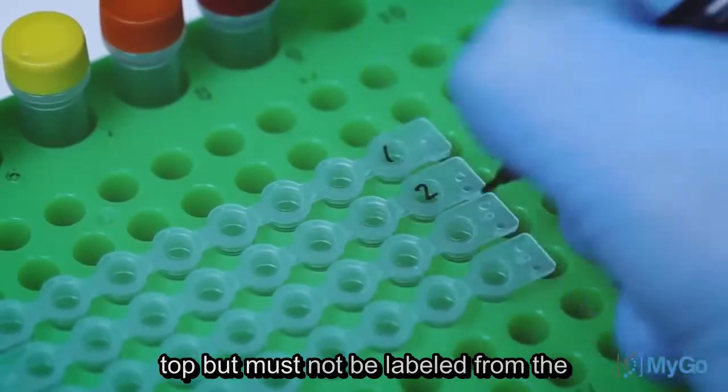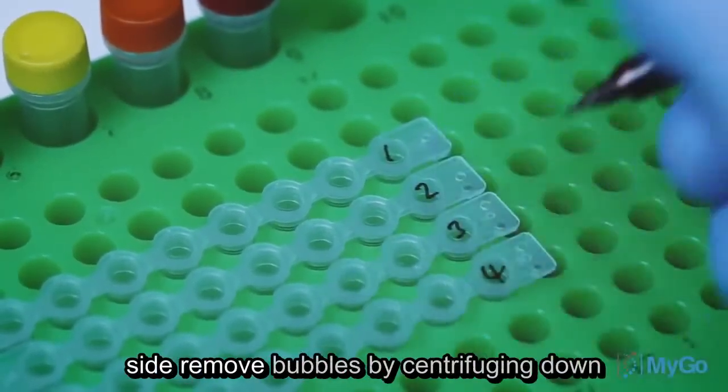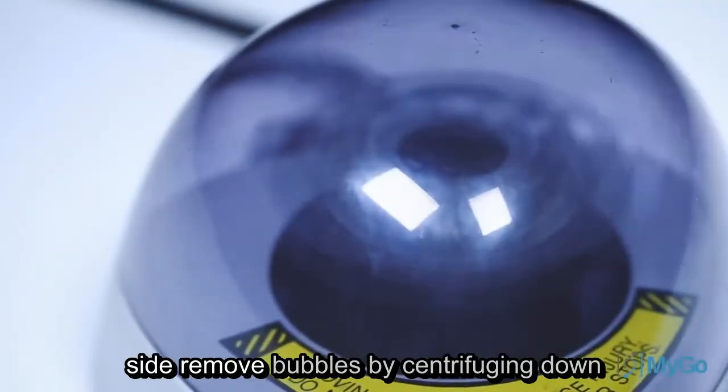Strips can be labelled on the top, but must not be labelled from the side. Remove bubbles by centrifuging down the strips.